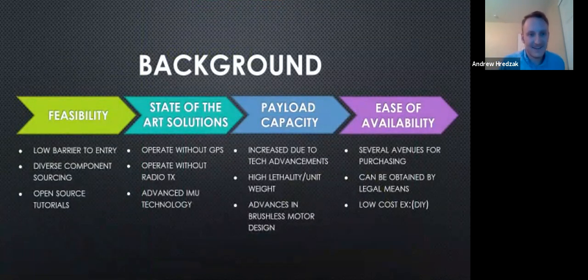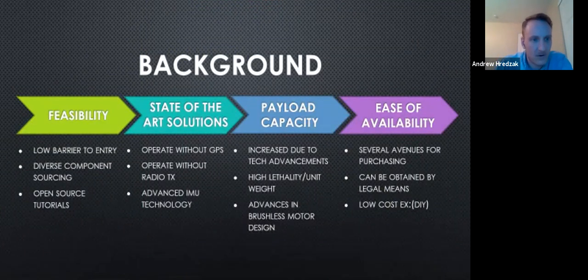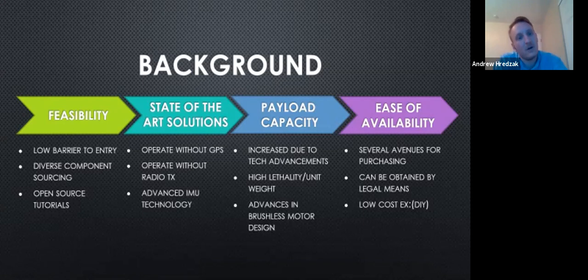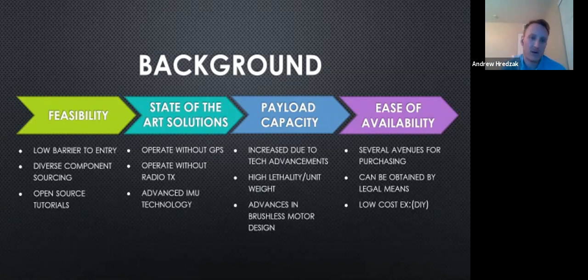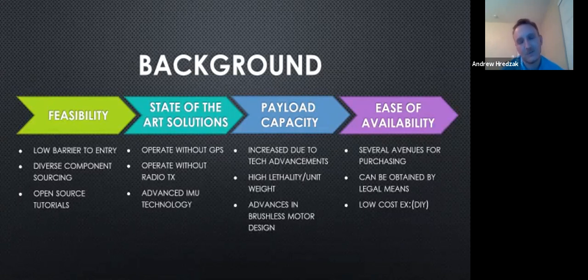This next slide gives us background about the UAV stadium problem. The first is feasibility, which gives a lower barrier to entry — drones are easy to build and there are tutorials available online. Next is the state-of-the-art solution: drone navigation operates with GPS and without radio transmission, relying heavily on IMU technology. Next is payload capacity, meaning there is more lethality per unit weight due to advancements in brushless motor design. Last is ease of availability — drones are low cost and parts are very easy to find.